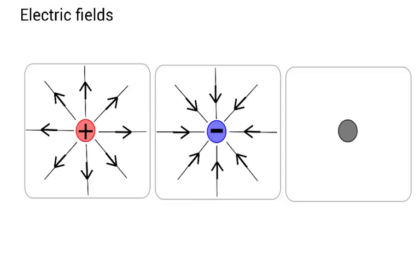Surrounding a positively charged object, there's an electric field, and that electric field moves outwards from the positive charge. Whereas something that's negatively charged, the electric field goes inwards. The arrows show you which direction a positive charge would go.